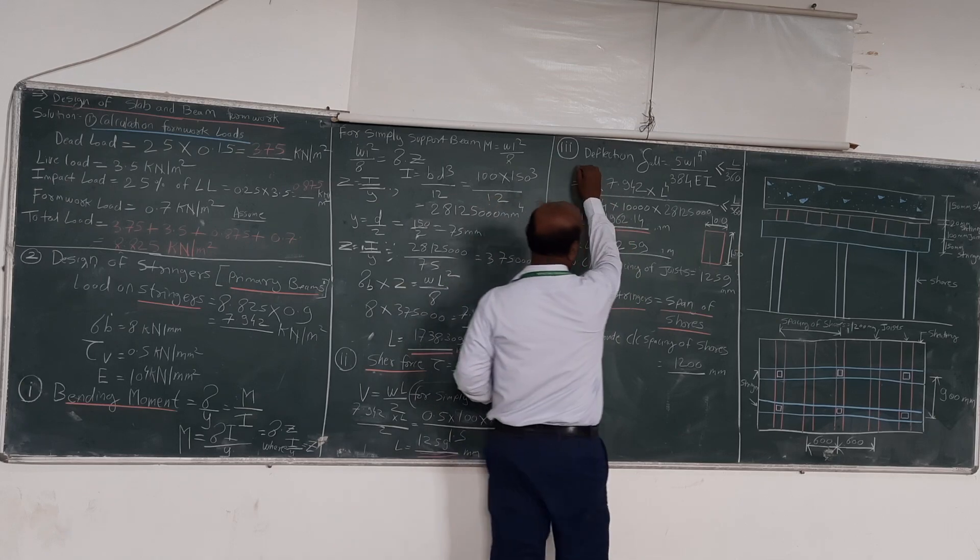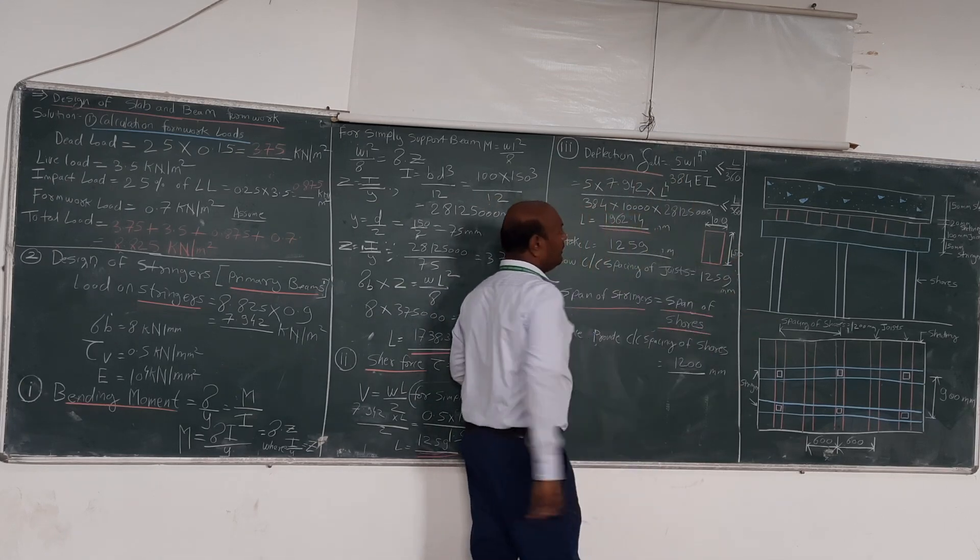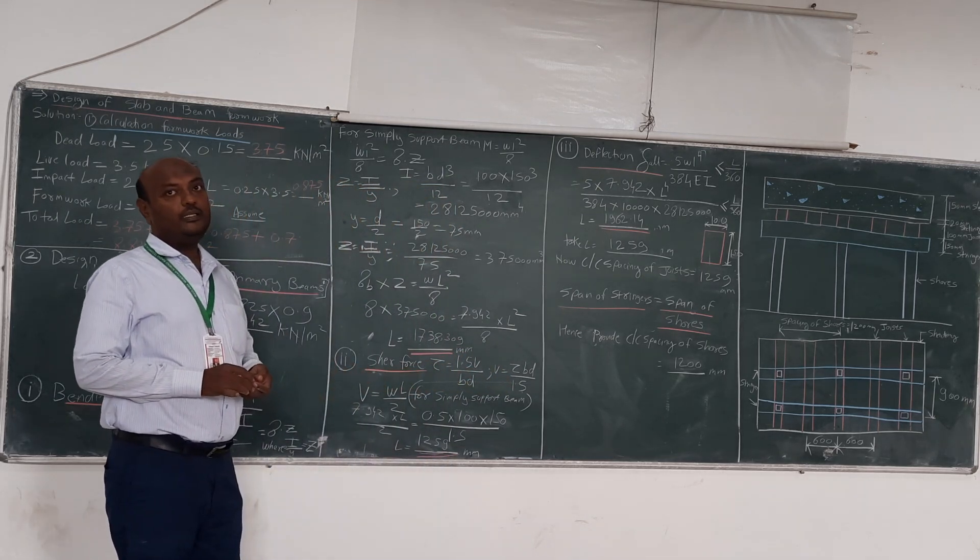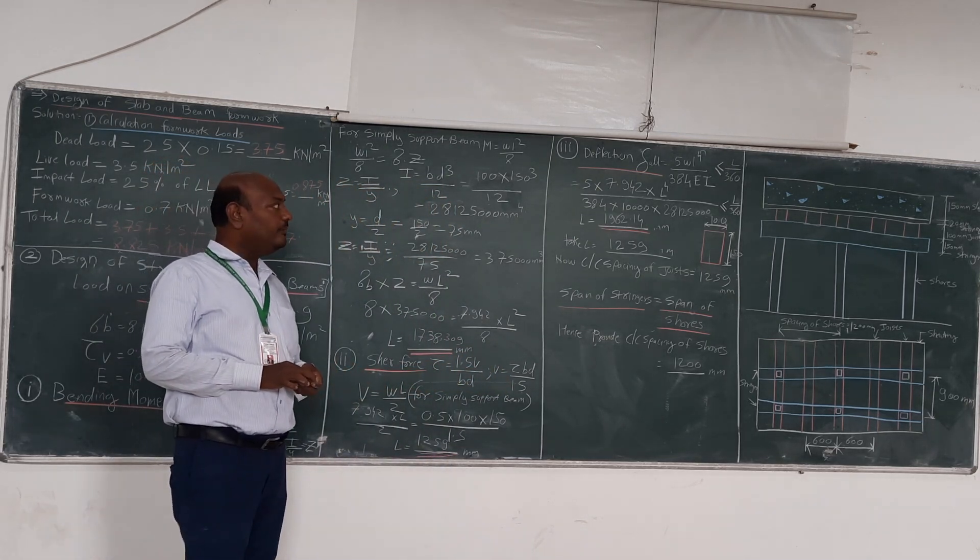And the third formula for the deflection we will be using here: 5wL raised to 4 divided by 384EI, that should be equal or less than L by 360.